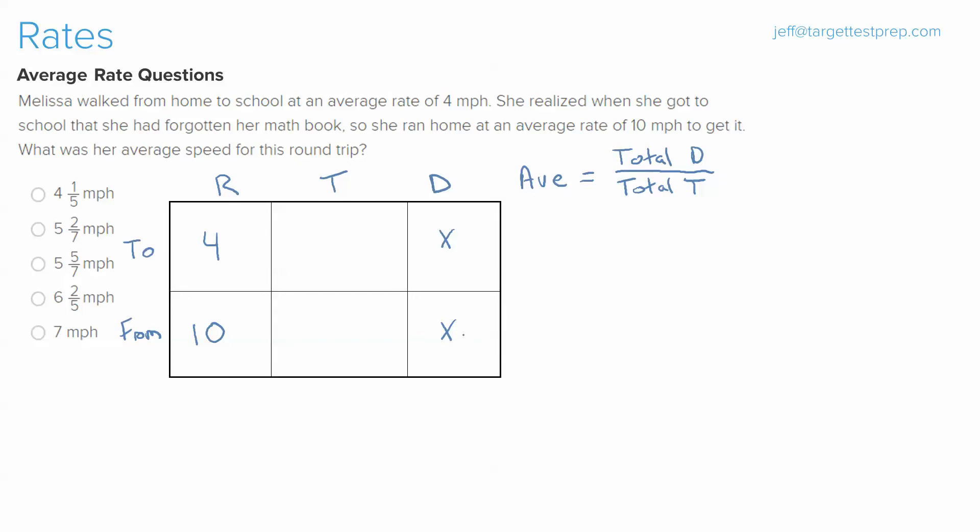Now what that's doing is it's allowing us to get our time in terms of variable x. Remember, time is equal to distance divided by rate, which means that the time going to school is x over 4, time going from school to home is x over 10, and now we're in a position where we can actually use this time and use this distance, and I'll circle all of them, to plug into our average formula.